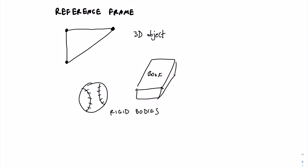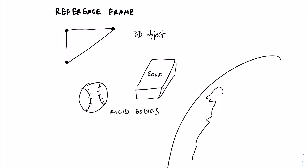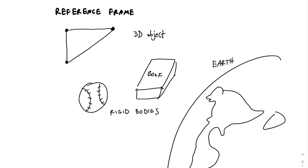We can also define Earth as a reference frame. These — rigid bodies and Earth — are the main reference frames we'll be using as engineers. If you don't fully understand all the technical details behind what a reference frame is, that's okay for now. Please read up on it later if you want to learn more.